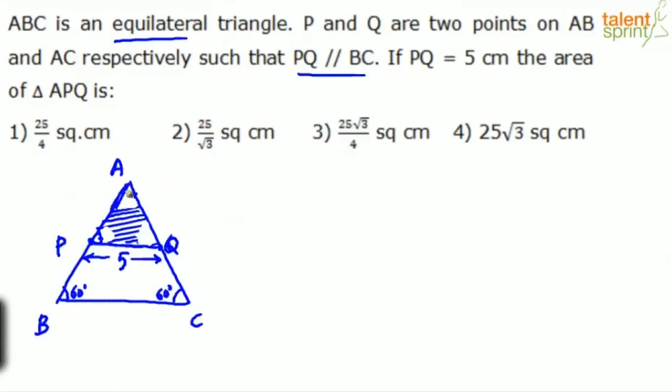This is the concept of that parallel line. PQ and BC are two parallel lines and we can say AB is a transversal or we can say AC is a transversal.